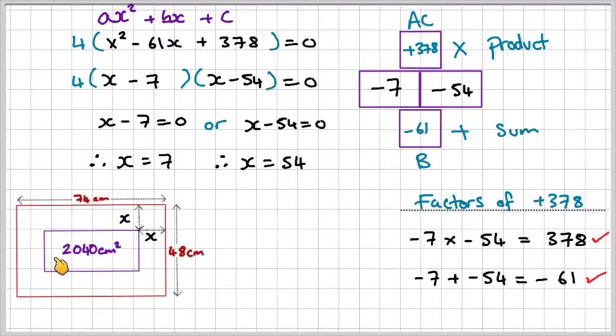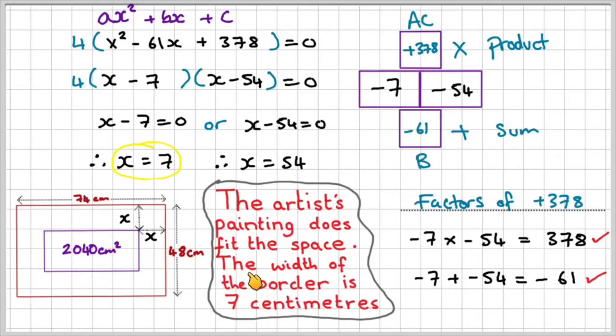Now if I bring back the diagram, remember we had a length of 74 centimeters and a width of 48 centimeters. This was the area that the gallery exhibition offered us. So clearly this solution 54 doesn't work, because we can't have 48 minus 54 minus 54. It'll give us a negative value. It wouldn't even work here anyway. It's too big of a value. The only solution that does work is X equals 7. So therefore, we can make a statement, the artist's painting does fit the space. The width of the border is 7 centimeters.